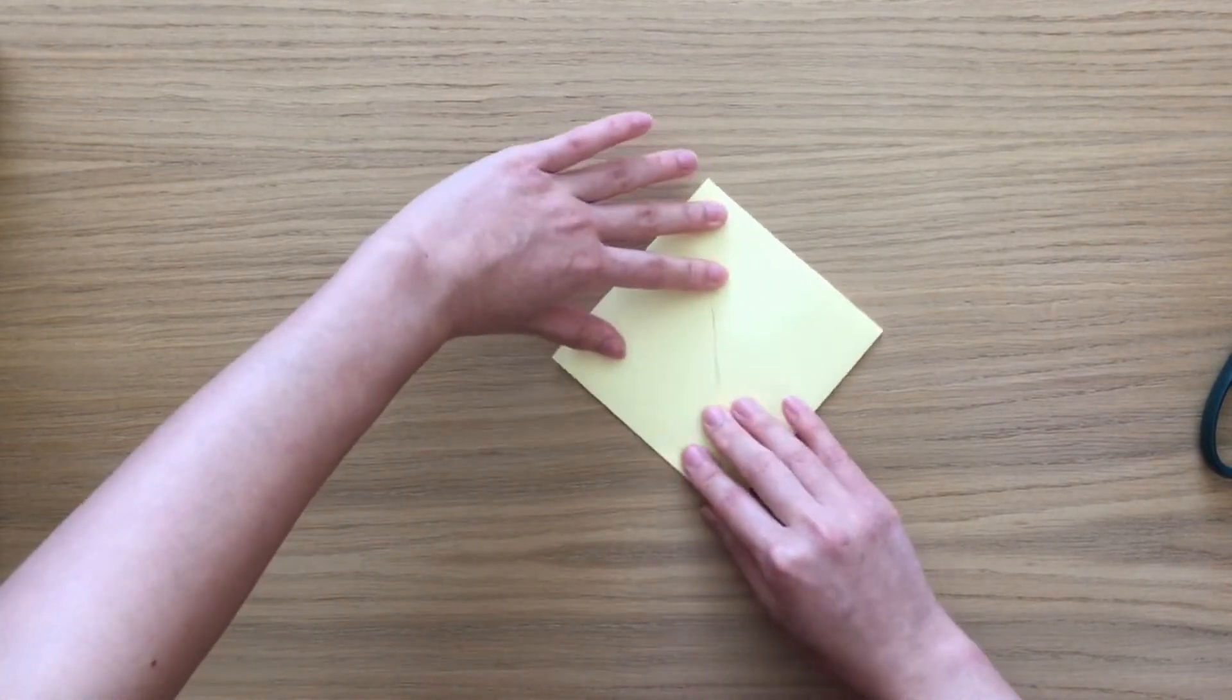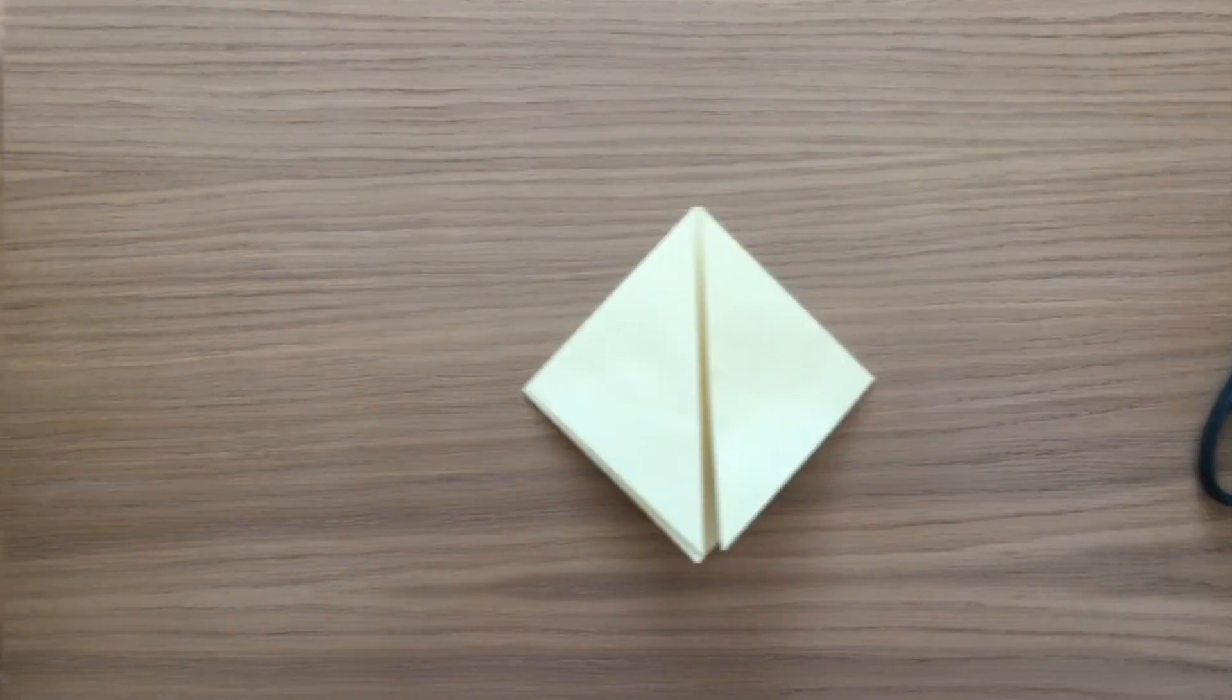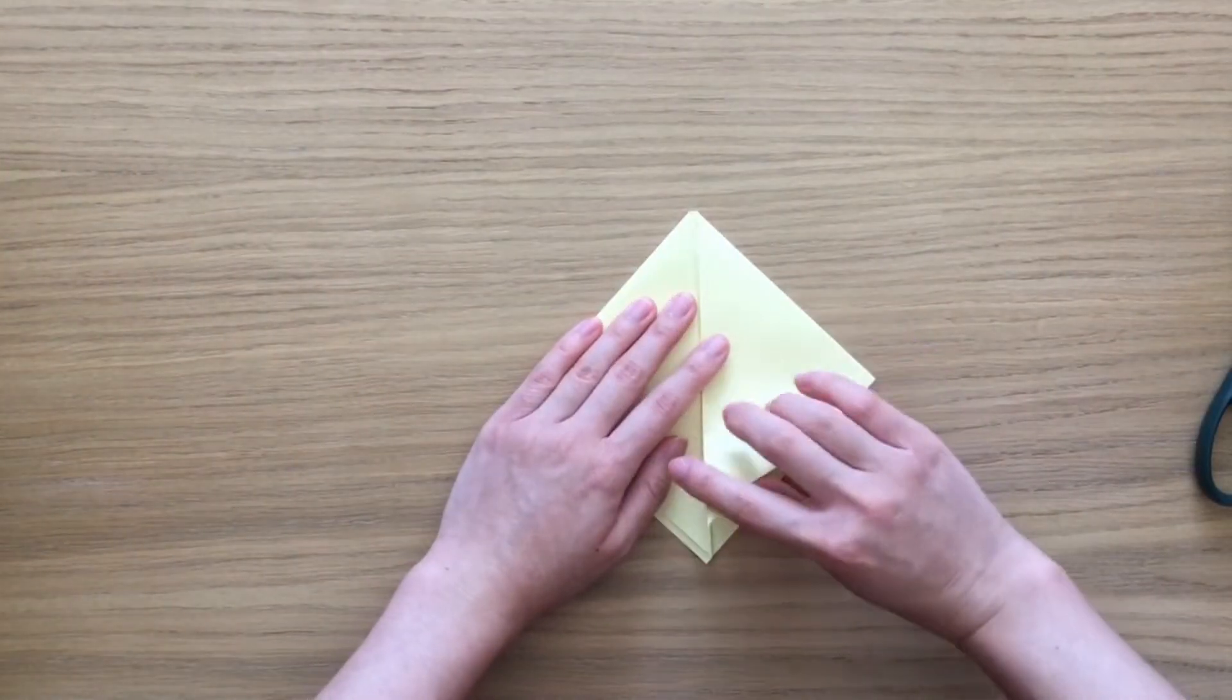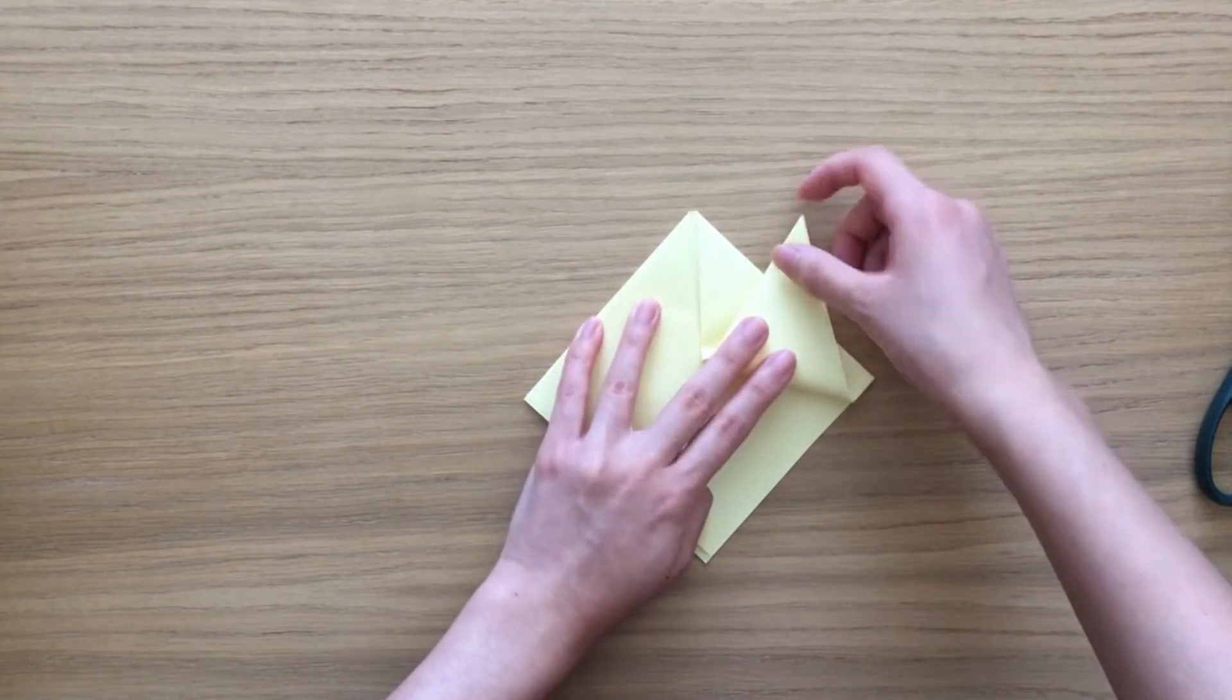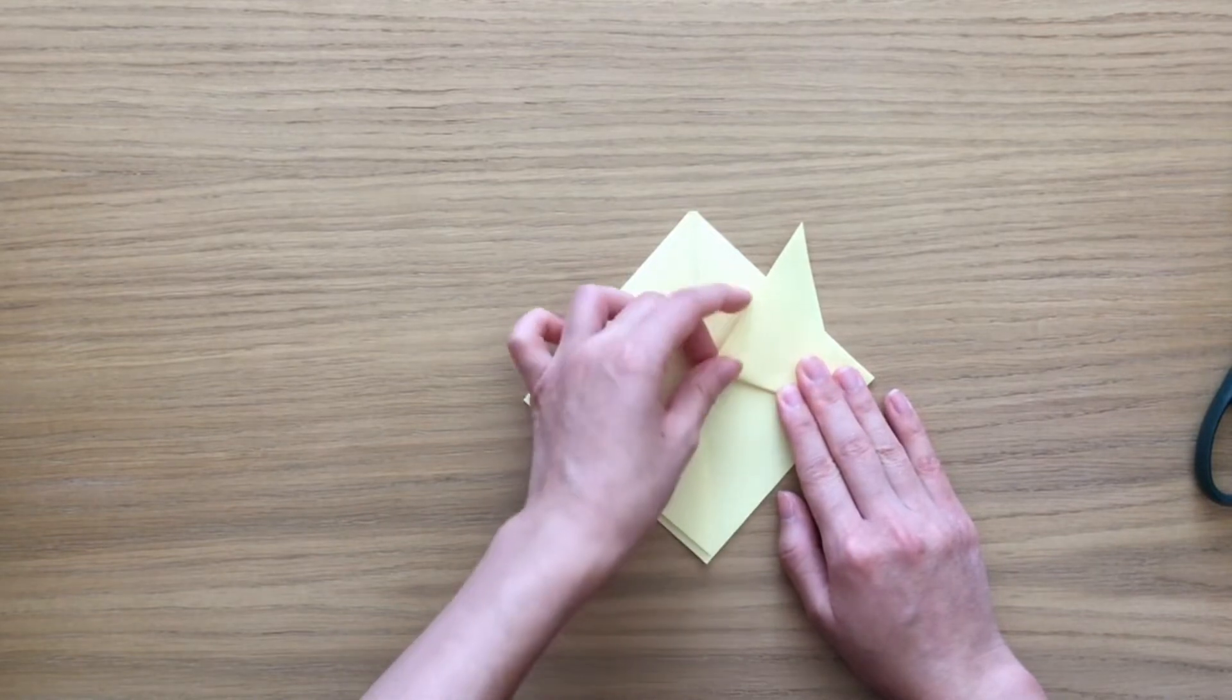Then we're going to turn the paper around so these flaps are at the bottom. To make the cat's ears, take one flap and fold it upwards. You want it to stick out a little bit so you can see them.